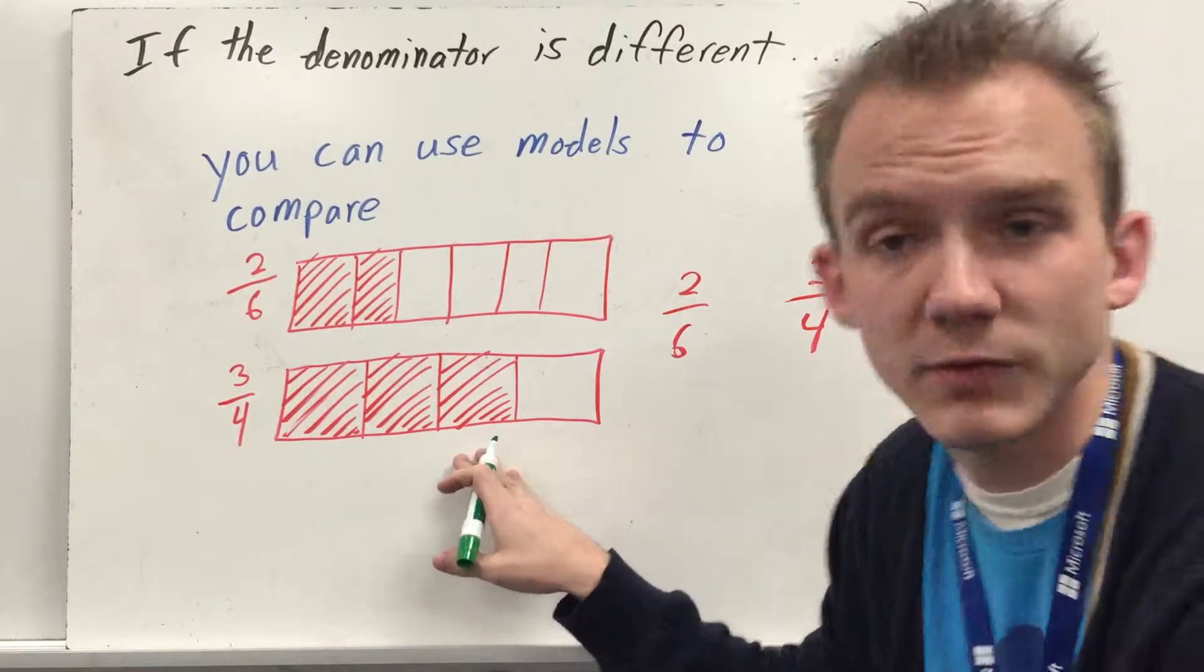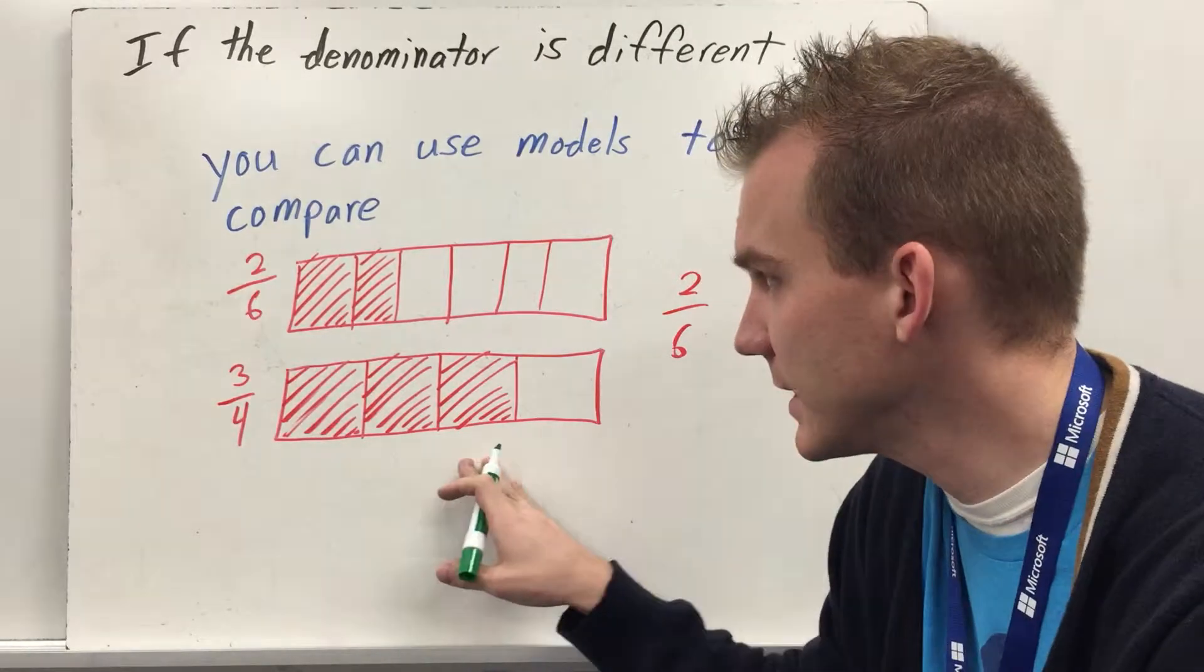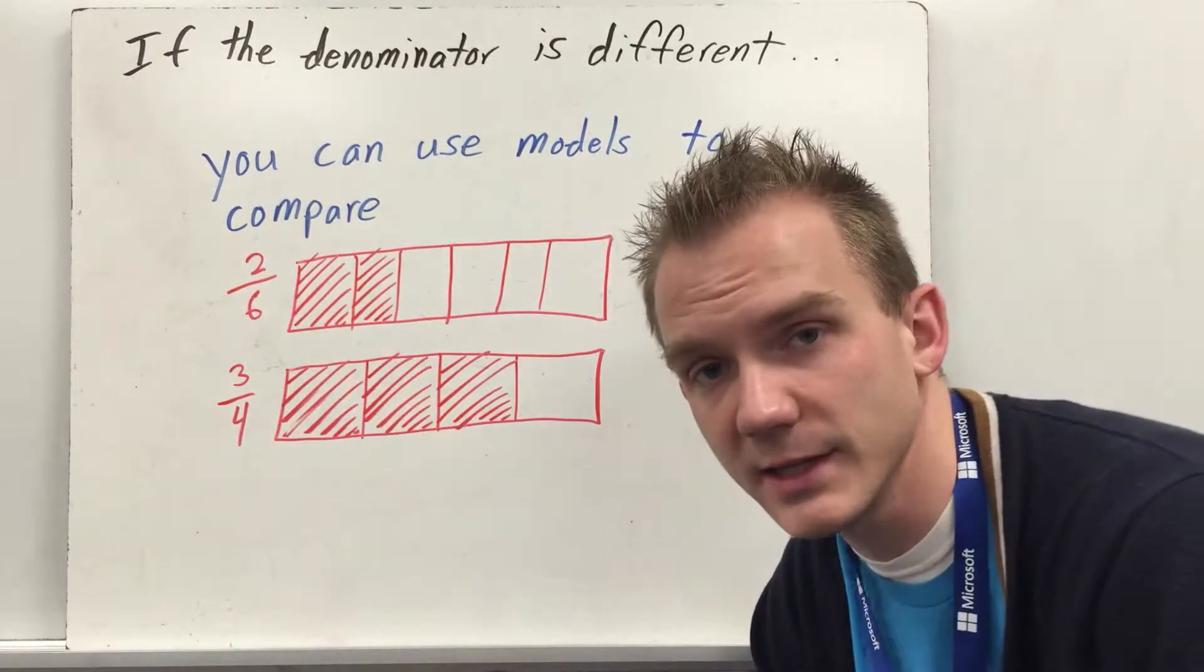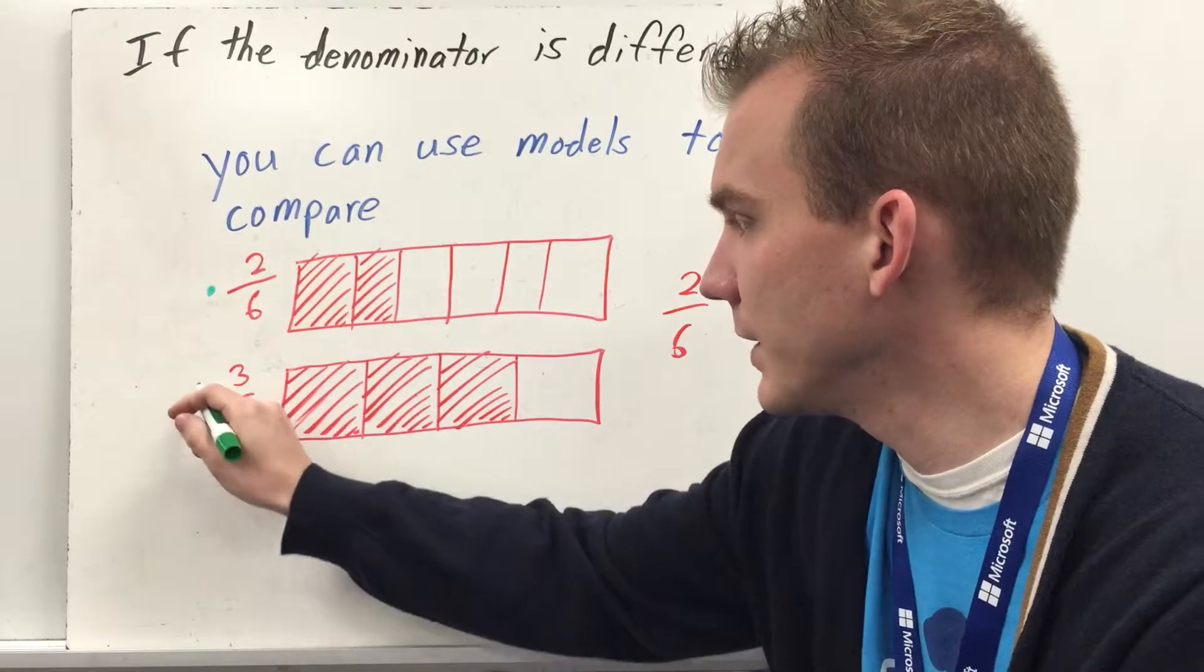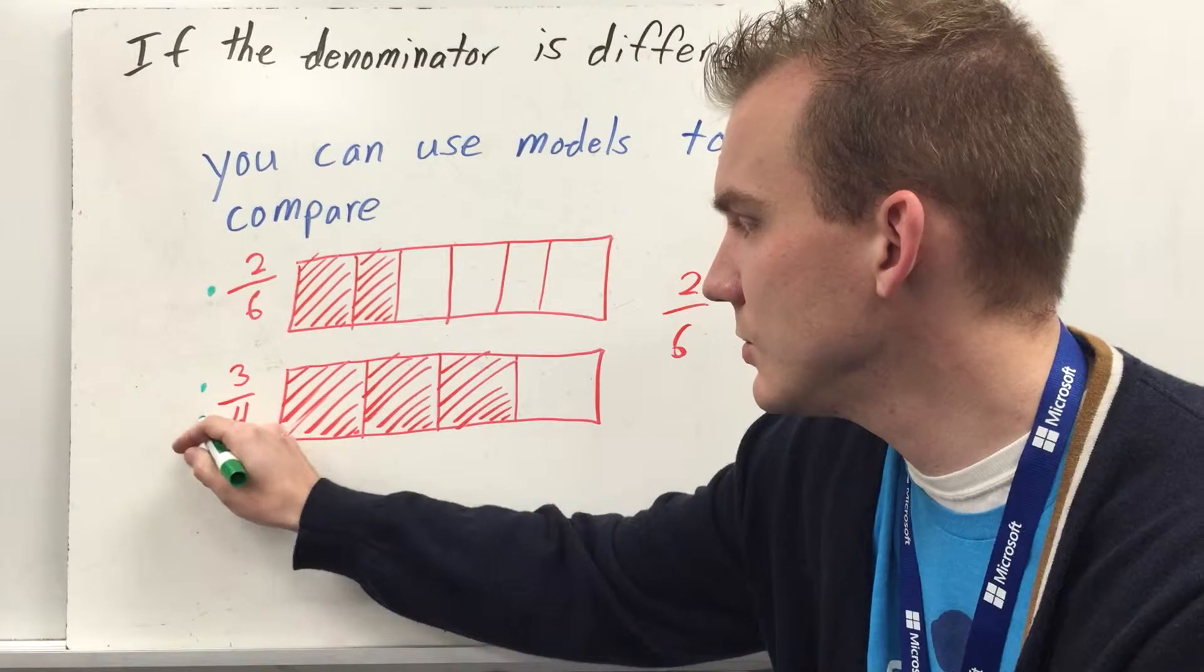And you can clearly see that the fourths covers more space. Three-fourths has more space covered than just two-sixths. So when I'm comparing them, it means that two-sixths is less, so it gets one dot, and three-fourths is more, so we'll get two dots.